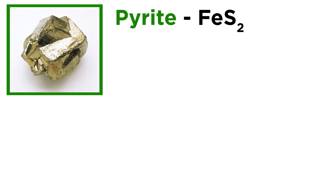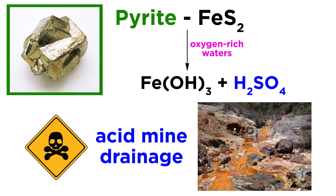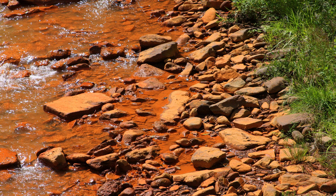Another mineral that weathers via oxidation is pyrite, which contains one Fe2+ ion and two S- ions. In the presence of oxygen-rich waters, both iron and sulfur are oxidized and react with water to form ferric hydroxide and sulfuric acid. The creation of sulfuric acid through this and similar reactions is responsible for destructive acid mine drainage that can damage ecosystems and contaminate drinking water. Acid mine drainage is doubly harmful because not only is the acidic water harmful, but it is also capable of dissolving large amounts of metals, thereby further contaminating rivers and streams.